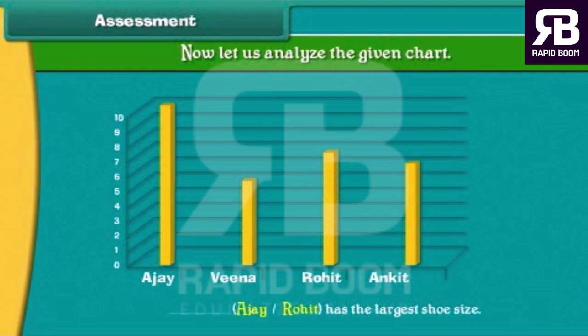Now let us analyze the given chart. In this chart, four students have measured their shoes on the paper. They cut and pasted the paper strips as shown in the given chart. Now answer the following questions by clicking on the correct options.